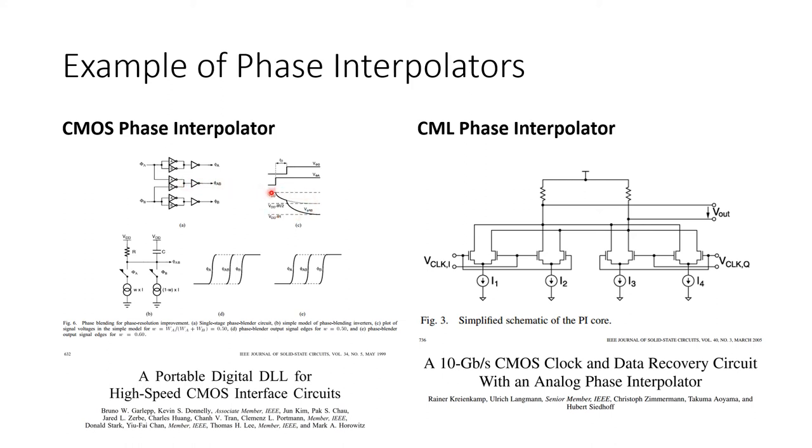that whichever inverter switches first will give rise to a relatively slow change in the output node here, this intermediate node here. And then when the second inverter changes a short time later labeled TD in this waveform sketch, then the node will start transitioning much faster because now you've got both inverters acting to pull down the node.